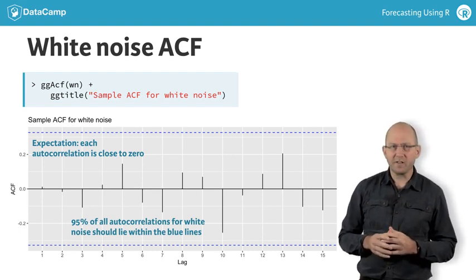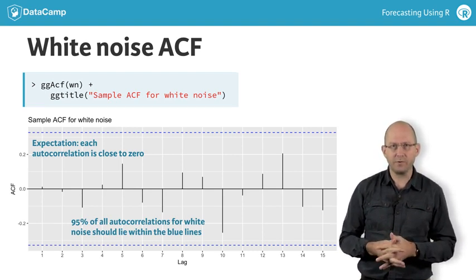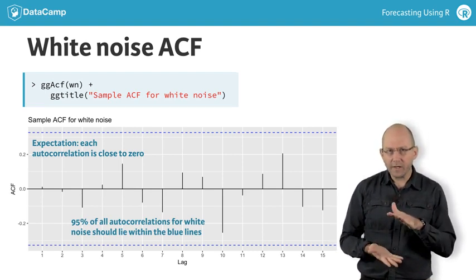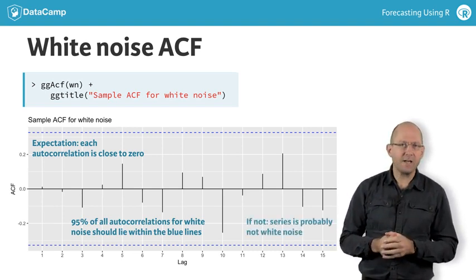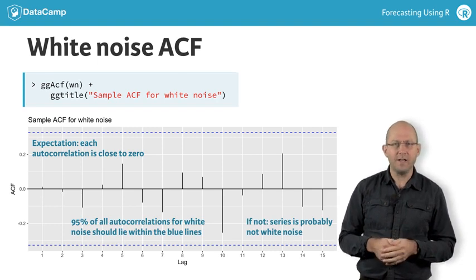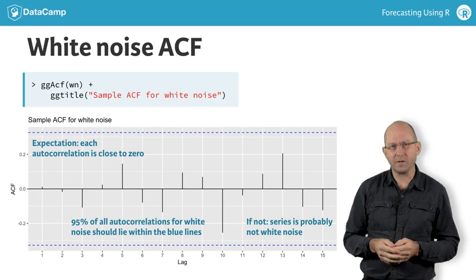The blue lines are based on the sampling distribution for autocorrelation, assuming the data are white noise. Any spike within the blue lines should be ignored. Spikes outside the blue lines might indicate something interesting in the data. At least they suggest there may be some information that you could use in building a forecasting model.